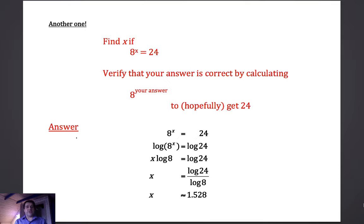So here's a question. Find x if 8 to the power of x is 24. Now a common mistake that a lot of people make is to look at that and say 3 because they think 8 times 3 is 24. But remember it's not 8 times 3, it's 8 to the power of 3. So 8 to the power of something equals 24.